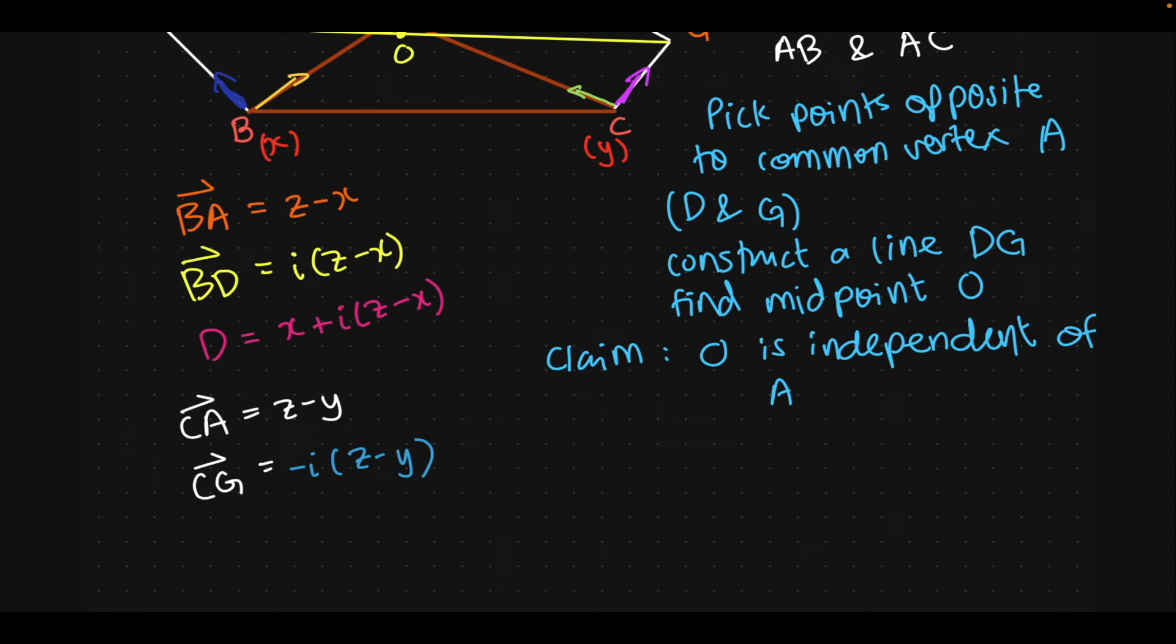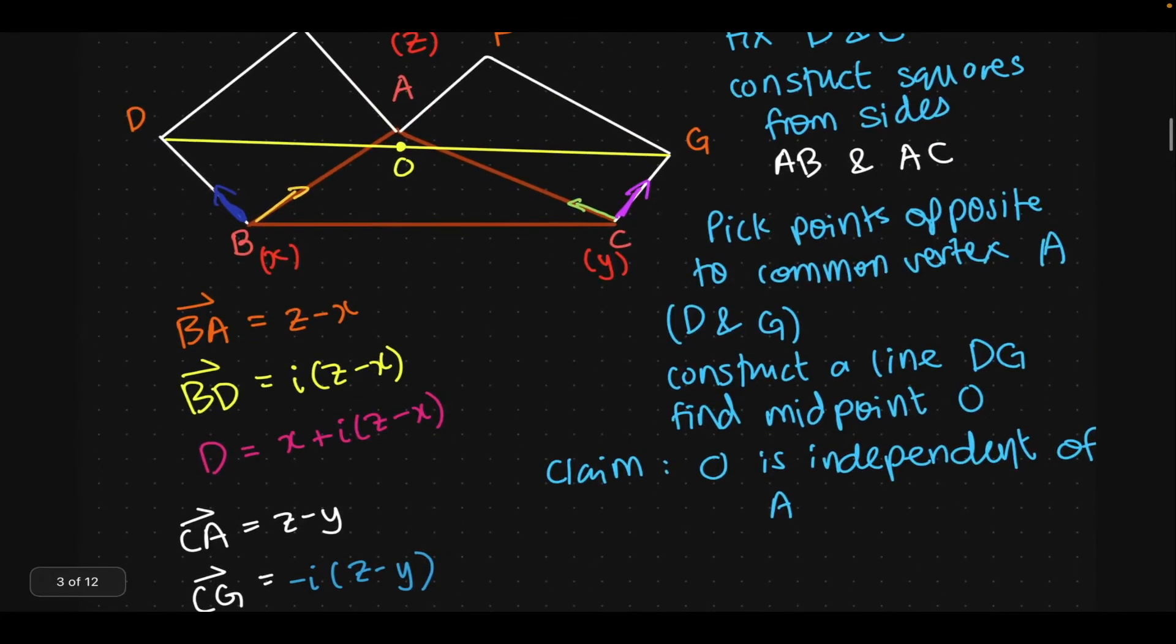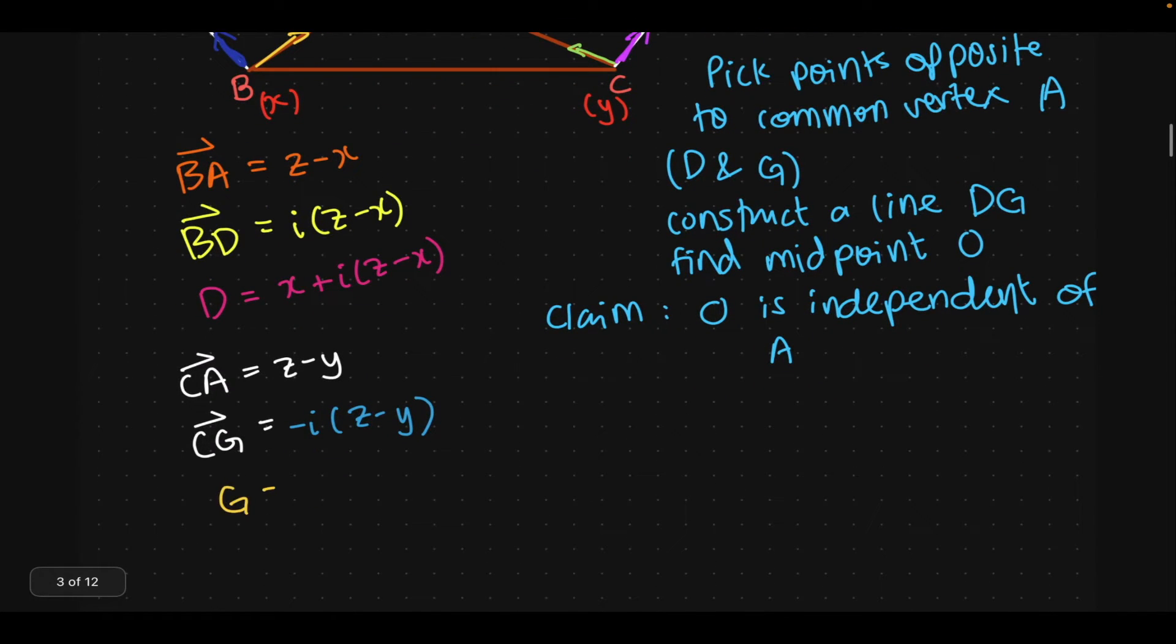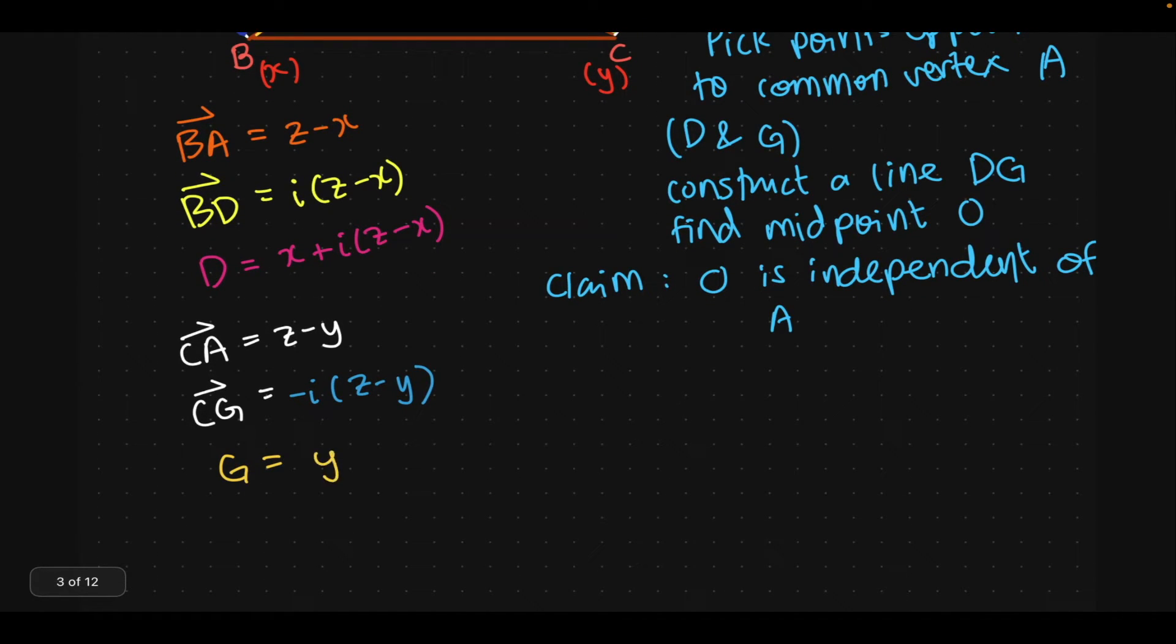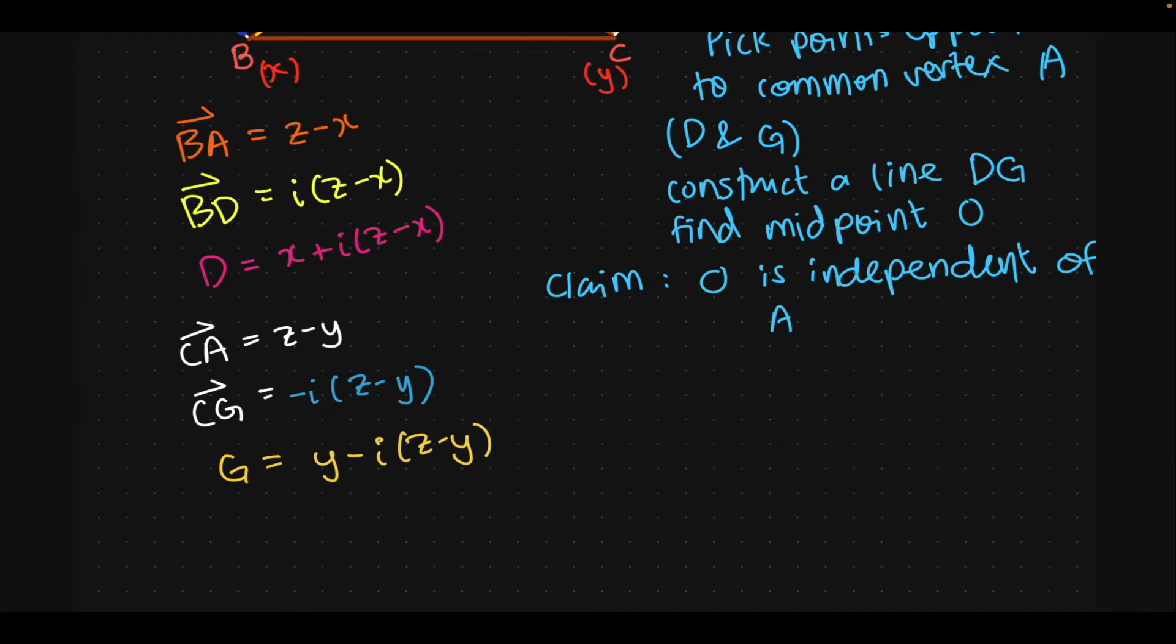So, minus I, Z minus Y. Hope you understand why we have a minus. It's because of the Cartesian sign convention that we use when we are rotating on the complex plane again. Now, all we have to do is find coordinates of G, which is, you can do that by adding the coordinates of point C to vector CG. So, Y minus I times Z minus Y. Okay, perfect.